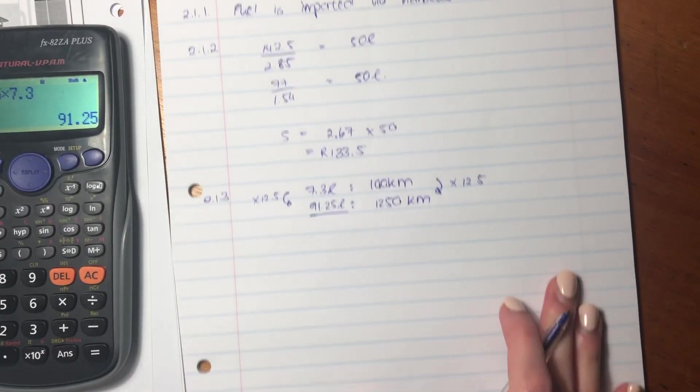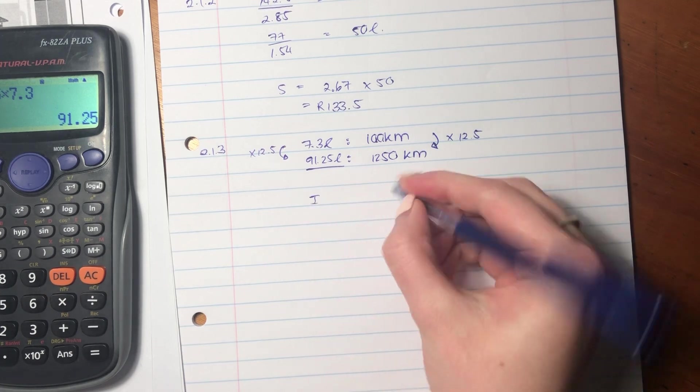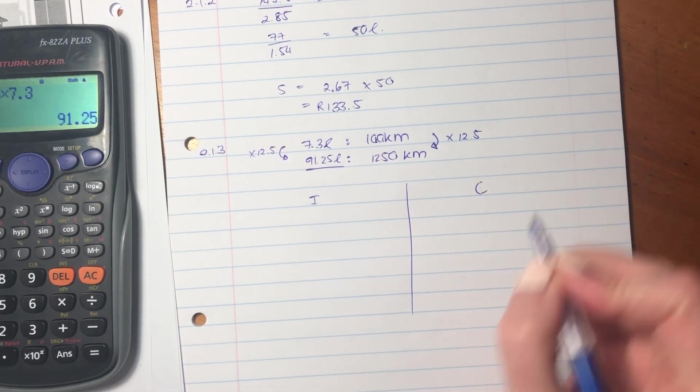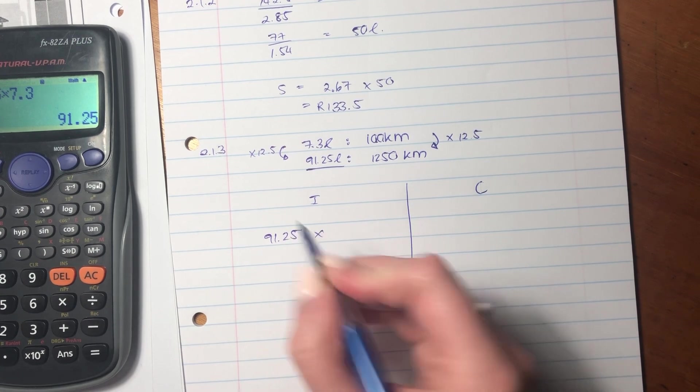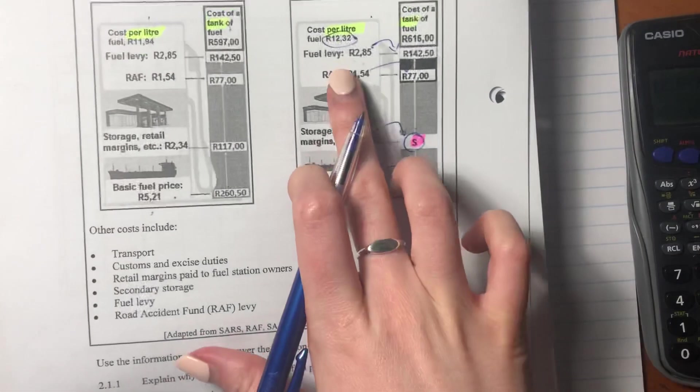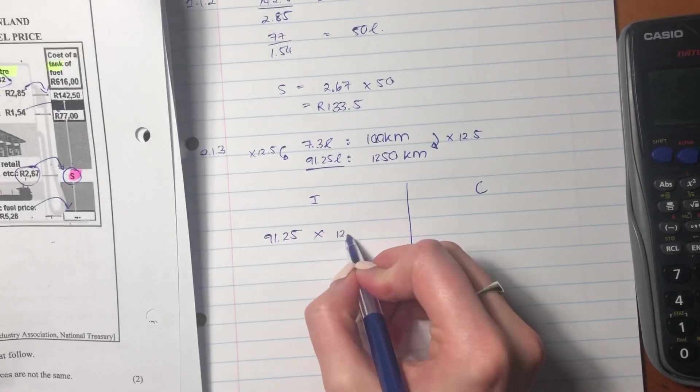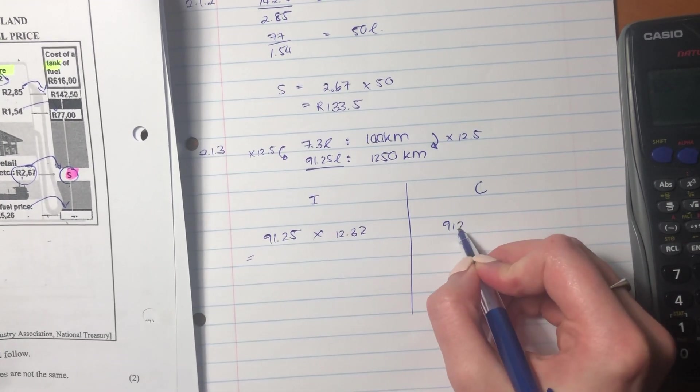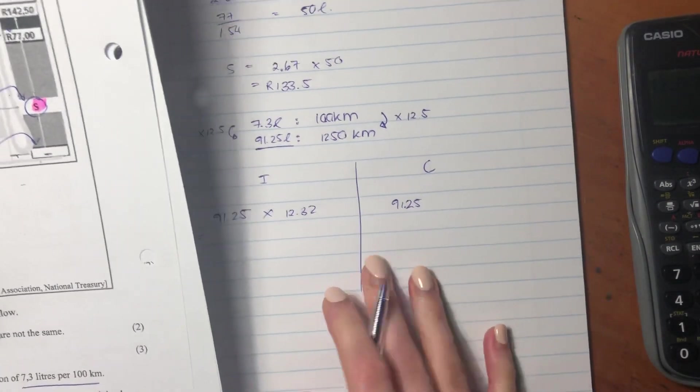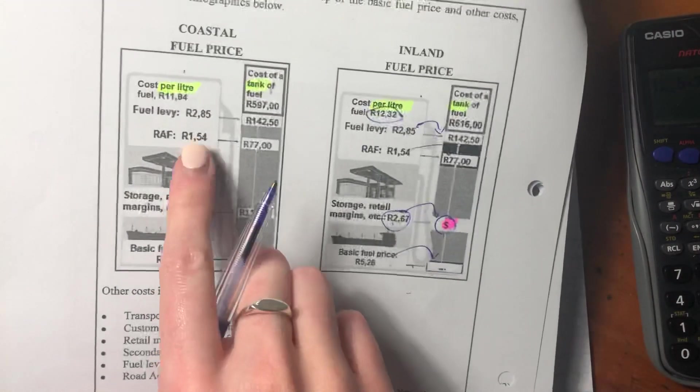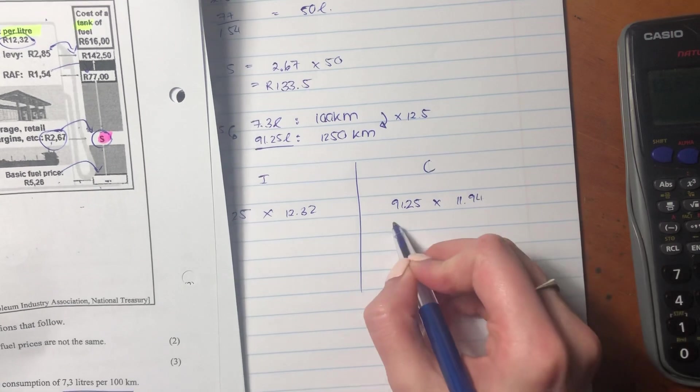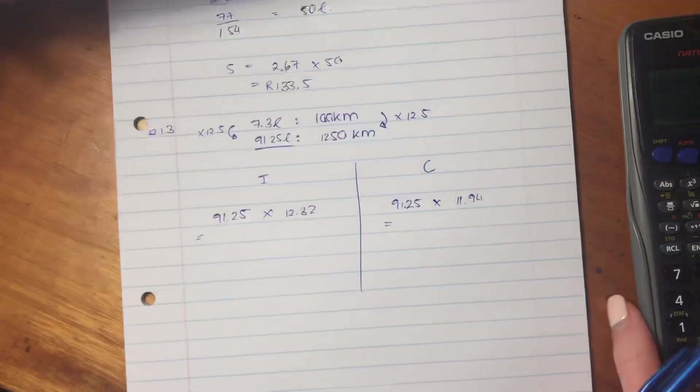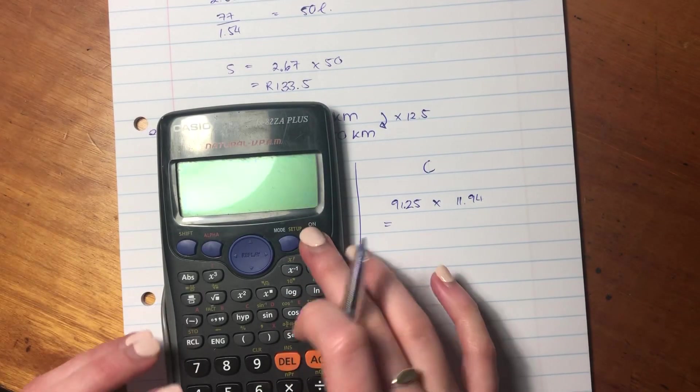So now what we're going to do is we're going to compare inland to coastal. Inland we say 91.25 times by 12.32, because that's the cost per liter. In the coastal area we say 91.25, and we times it by 11.94, to get the cost of coastal. So let's calculate those costs now.